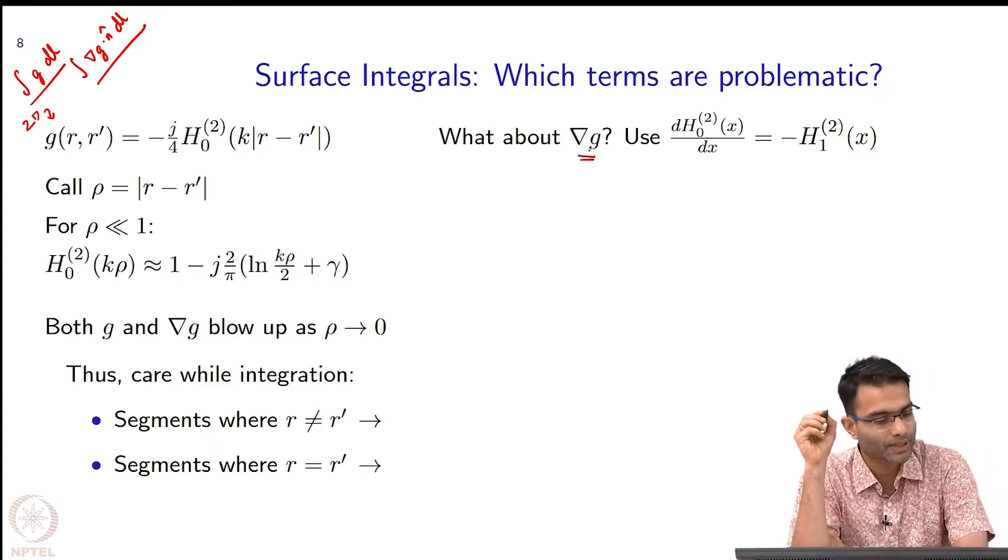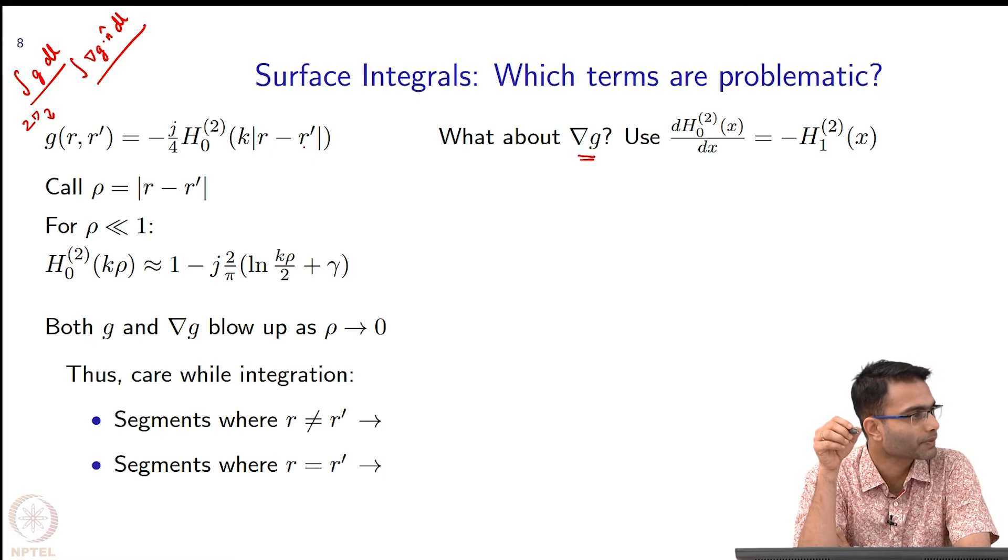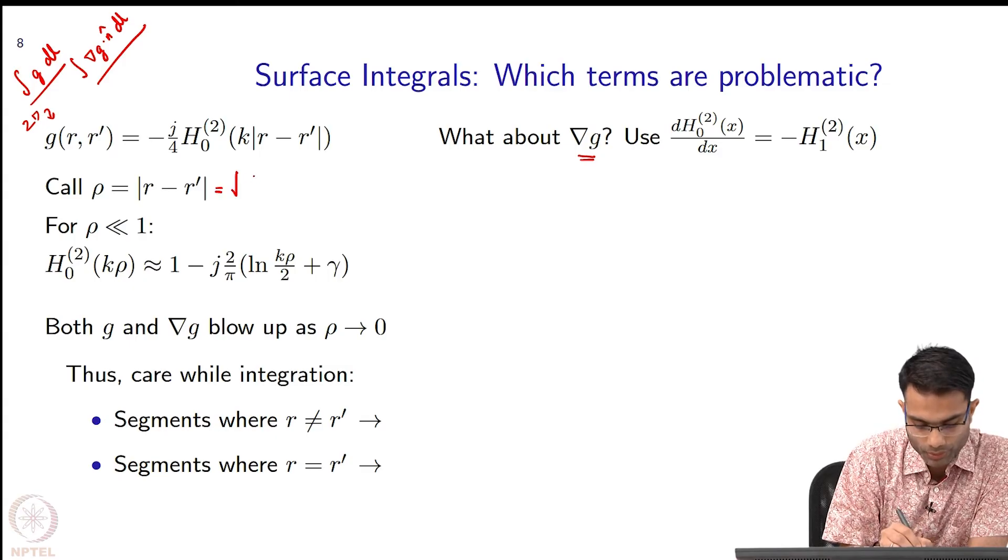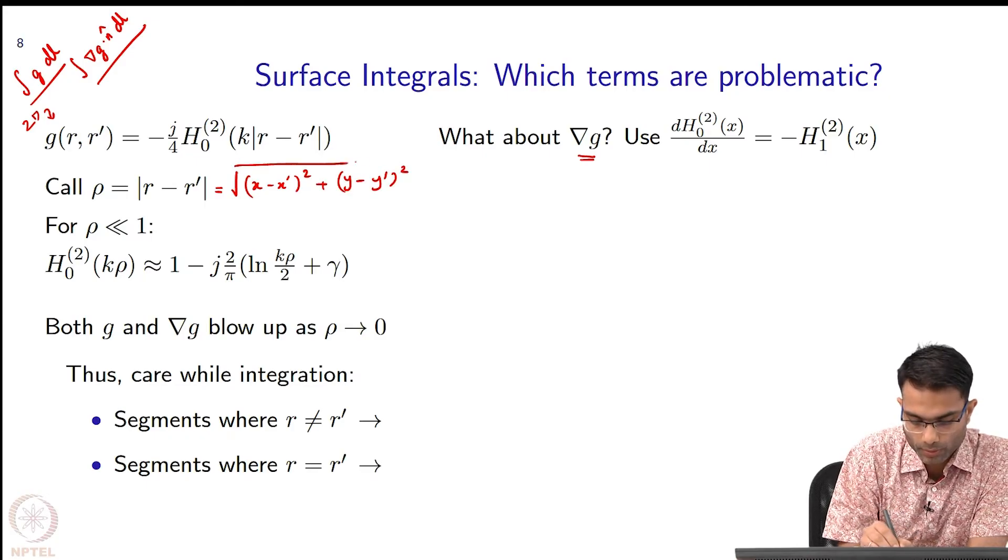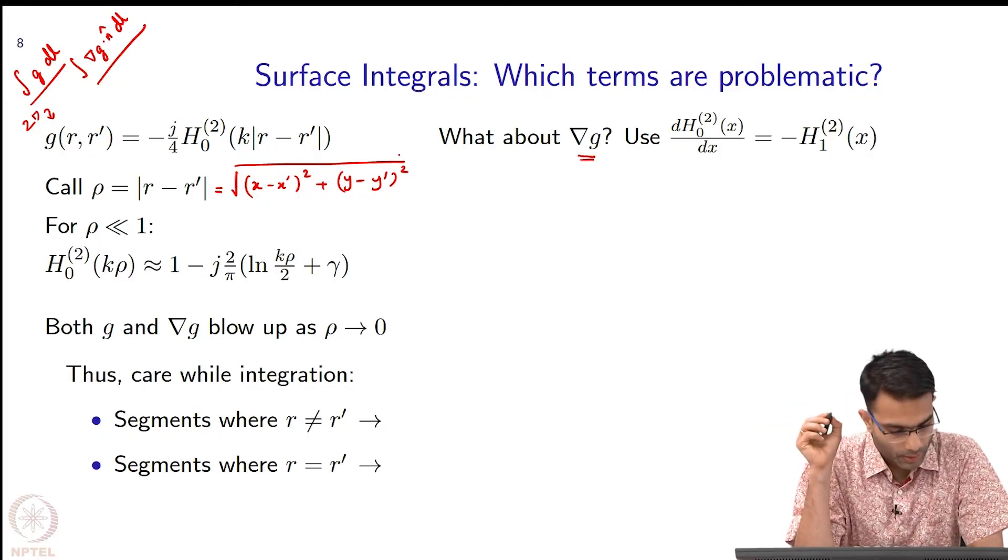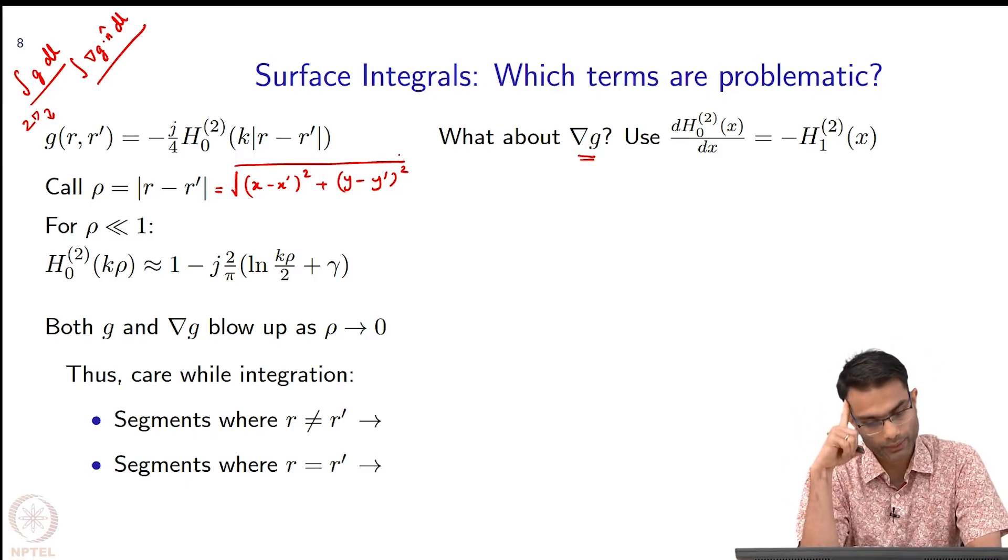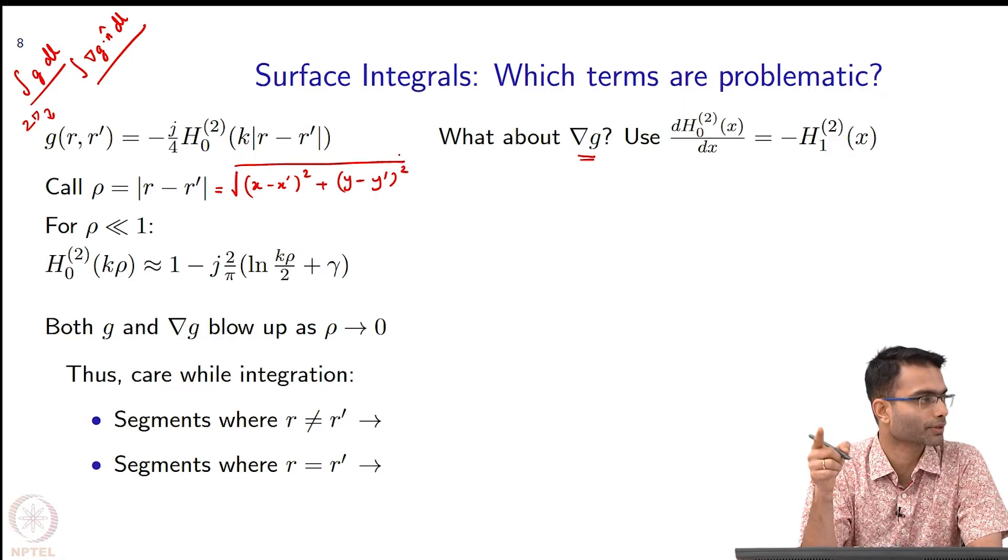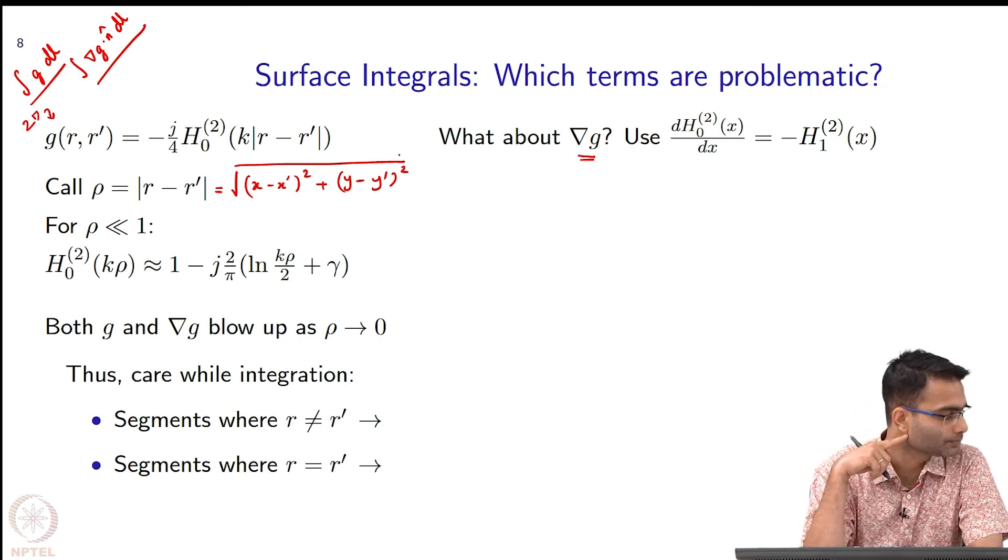Just to make the notation a little bit easier, this R minus R prime appears everywhere. It is a distance between two vectors R and R prime. I will just call it rho, and rho I can also write as root of (x - x')^2 + (y - y')^2. To get at grad G, I need to take the derivative. I can do it in polar coordinates or Cartesian coordinates. In this particular case, using Cartesian coordinates gives us a simpler answer.